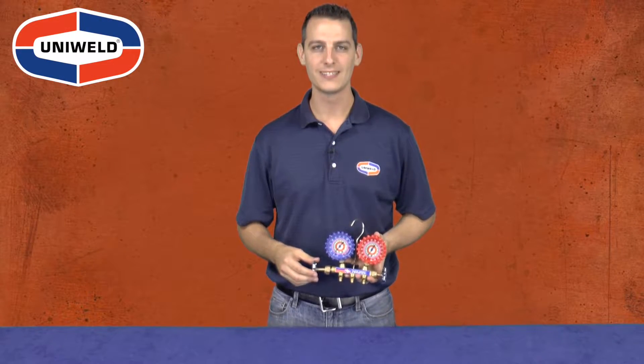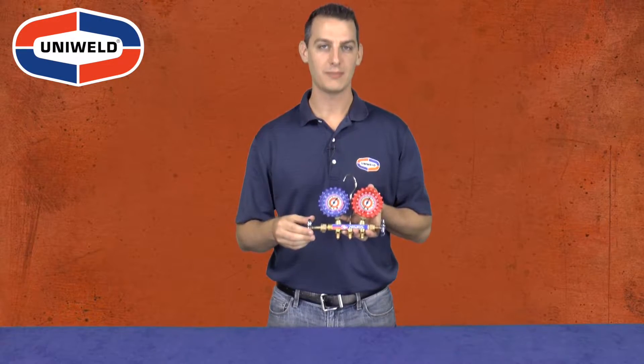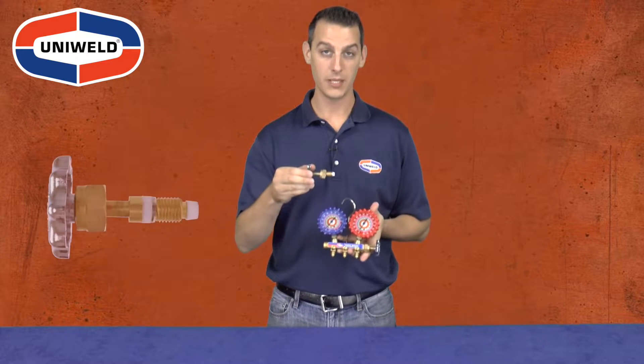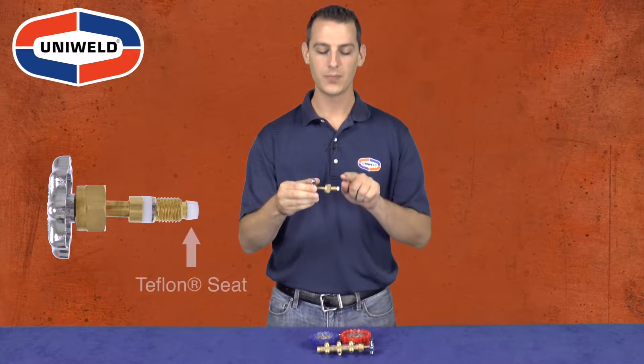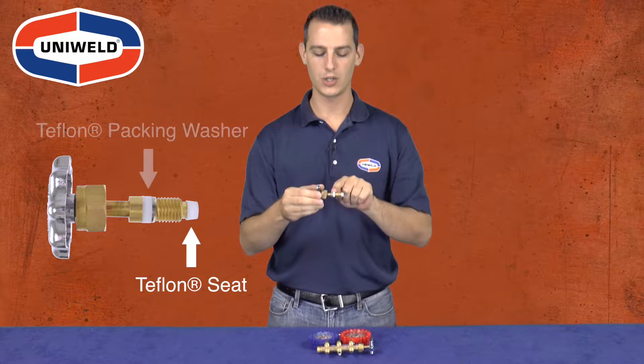Hi, Matt here with Uniweld products. Uniweld's two valve brass manifold has a valve stem assembly with a Teflon seat and a Teflon packing washer.